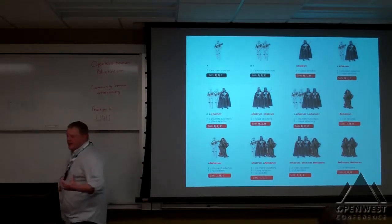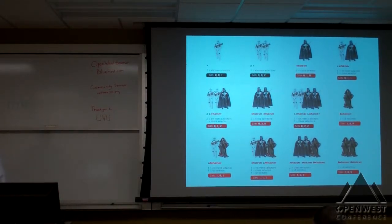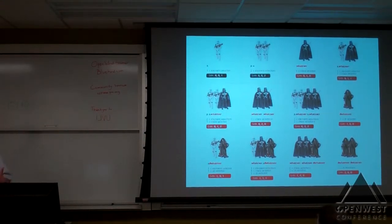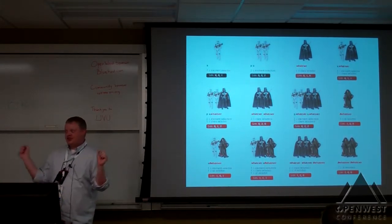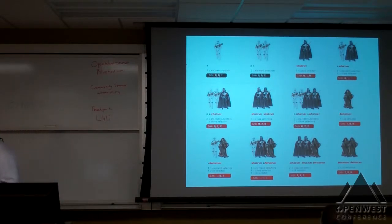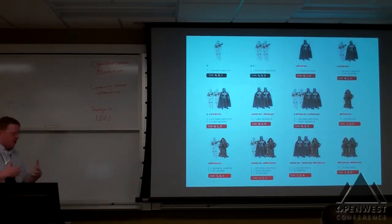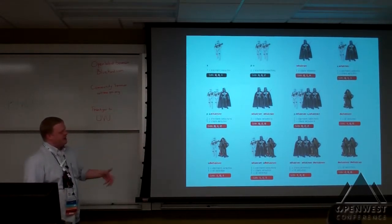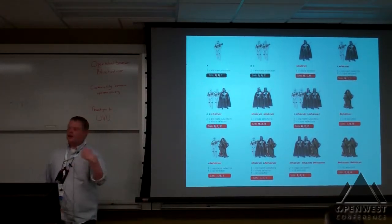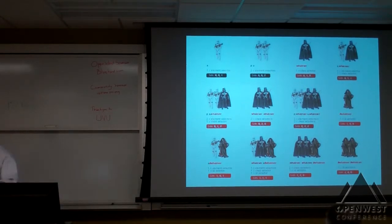This is really important because if you don't understand specificity, when you look at your rules and say 'I don't know why this rule is taking precedence over the other rule,' typically the developer starts throwing extra selectors in there hoping to increase the specificity, which can make your style sheets a lot more complicated than they need to be. Whereas if you understand specificity, you can say 'all I need to do is just add one more element or an ID.'